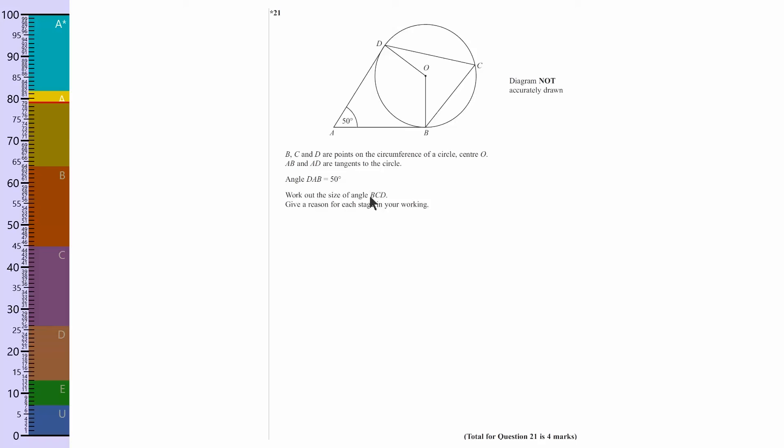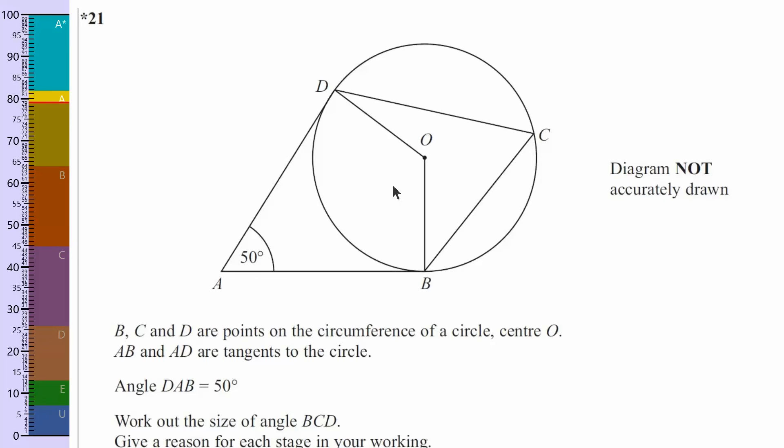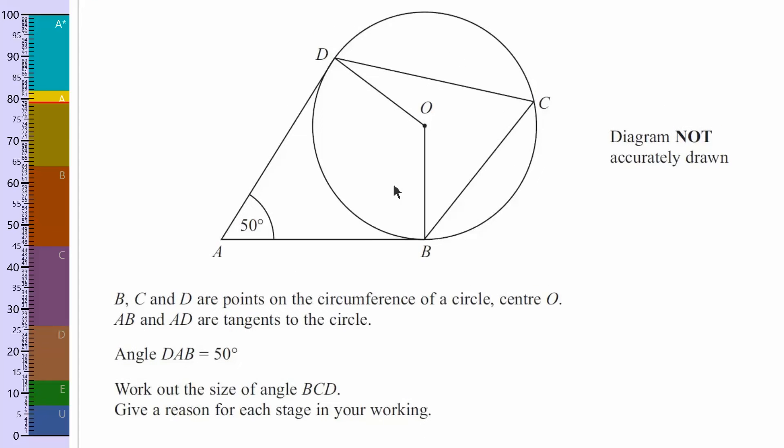So work out the size of angle BCD. So the first thing I do, I'm just going to zoom in on this, make it a bit easier to see. First thing I do is mark on the diagram where BCD is. So BCD is this one here, so I know which one I'm trying to find. The angle is always the one in the middle when they're written as three letters, so just imagine going from B to C to D, and that marks out where the angle is.